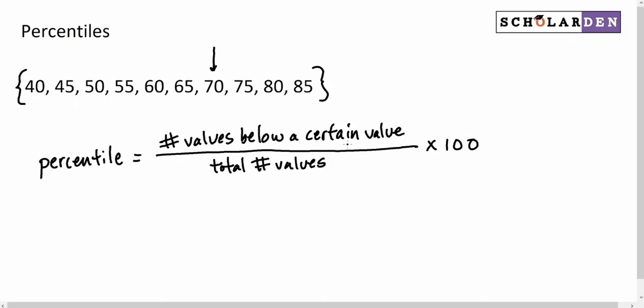So let's apply that here for 70. How many values are below 70? We're not including the 70. So 1, 2, 3, 4, 5, 6. Six values are below. How many total values are in this set?